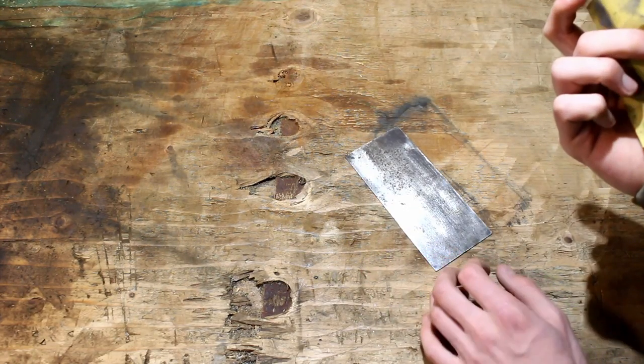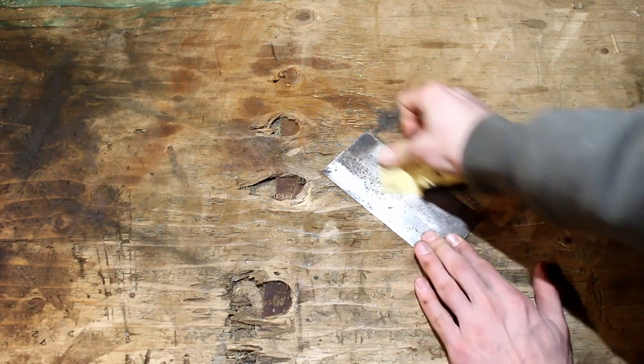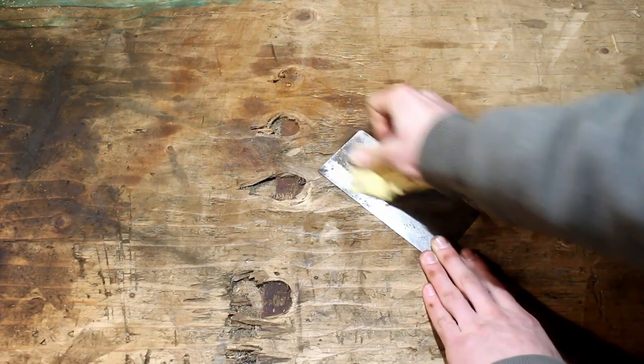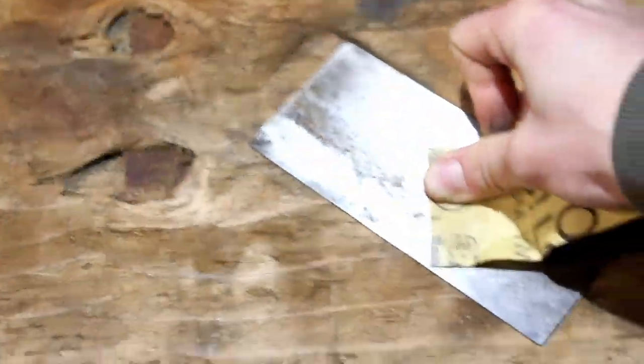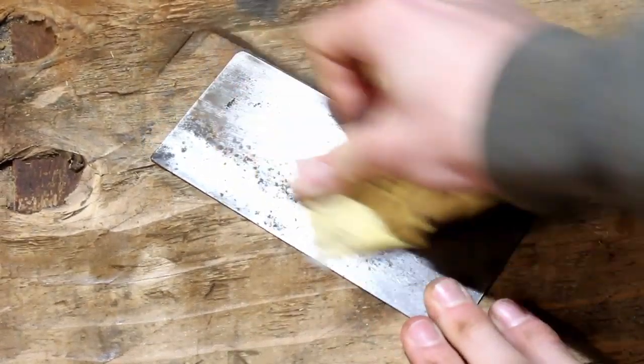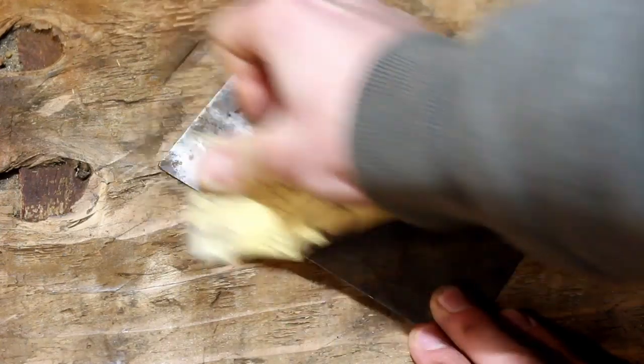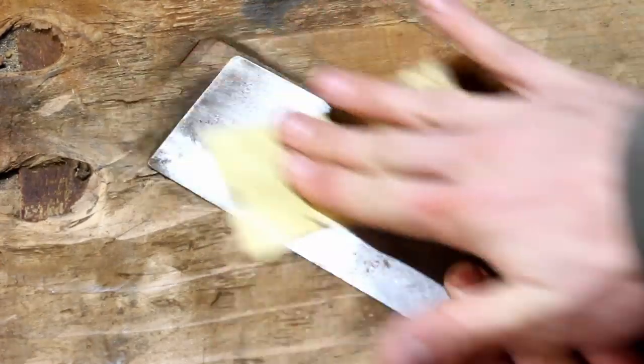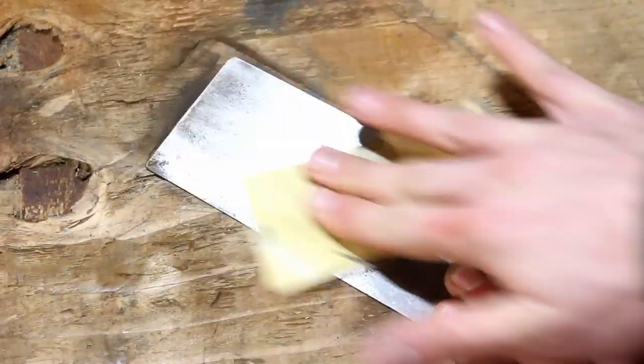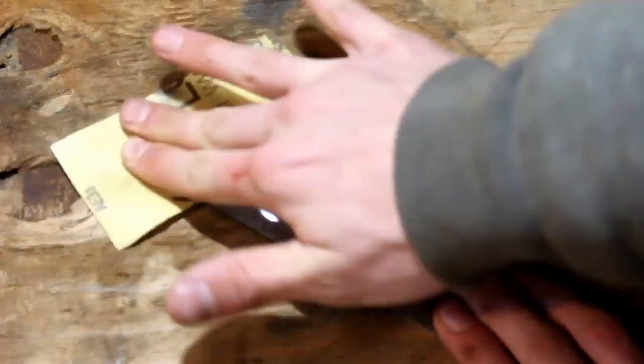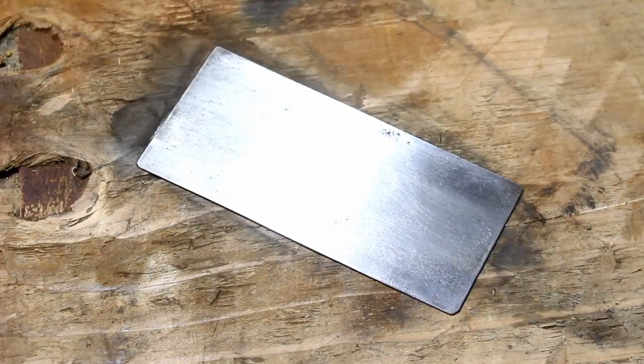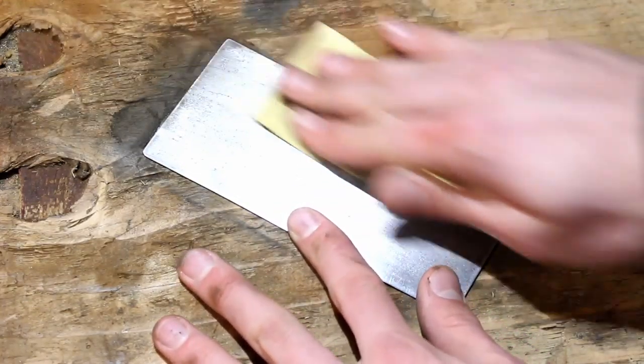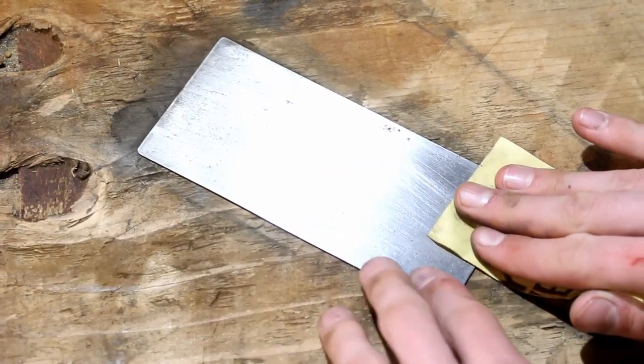Then we'll switch to the other side. This side is a little bit worse than the first side was. So once you're about done with the other side, just do short, slow, long strokes across it so there won't be any little curved markings in it.